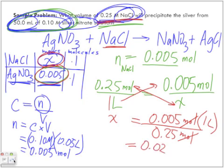Now that 0.02 liters, we want to convert it to milliliters, which comes out to 20 milliliters.